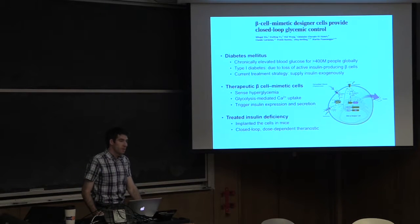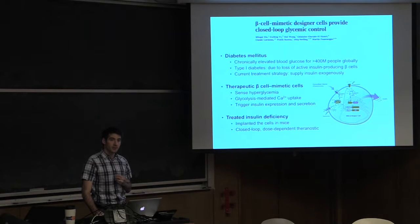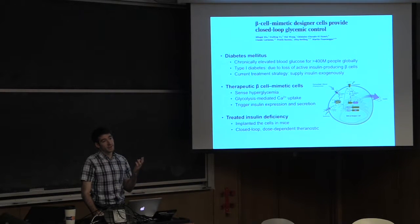On to eukaryotes, a lot of people might be familiar with Martin Fusenegger's work, a lot of theranostics, cell-based therapies, so the notion of taking a genetically-engineered cell, implanting it in a mouse or potentially human, and having the cell both sense and then therapeutically act upon some disease state.